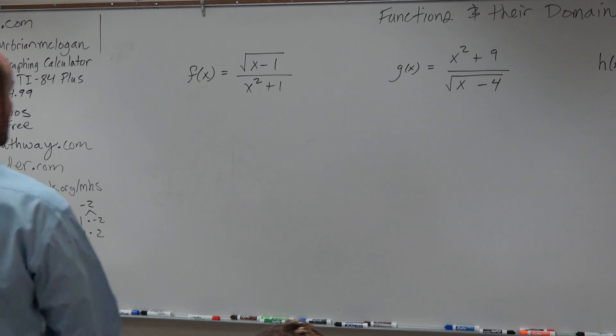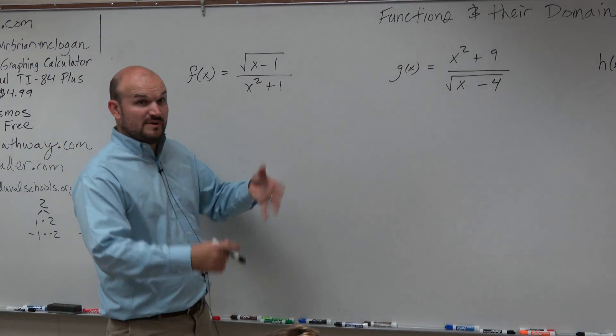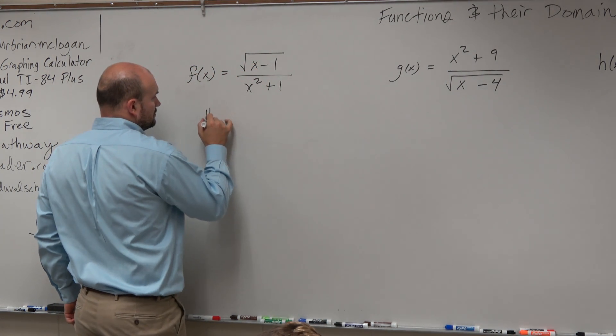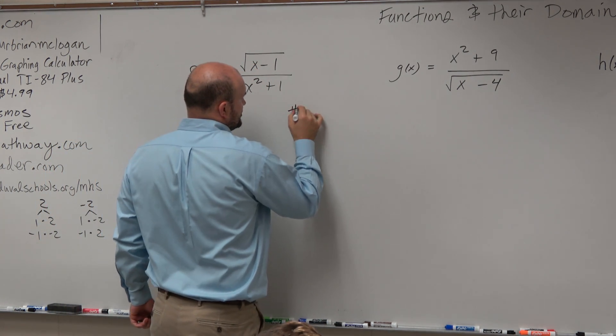In this case, we have the square root of x minus 1 divided by x squared plus 1. We have two restrictions. Would you guys agree? We have restriction number 1 and restriction number 2.